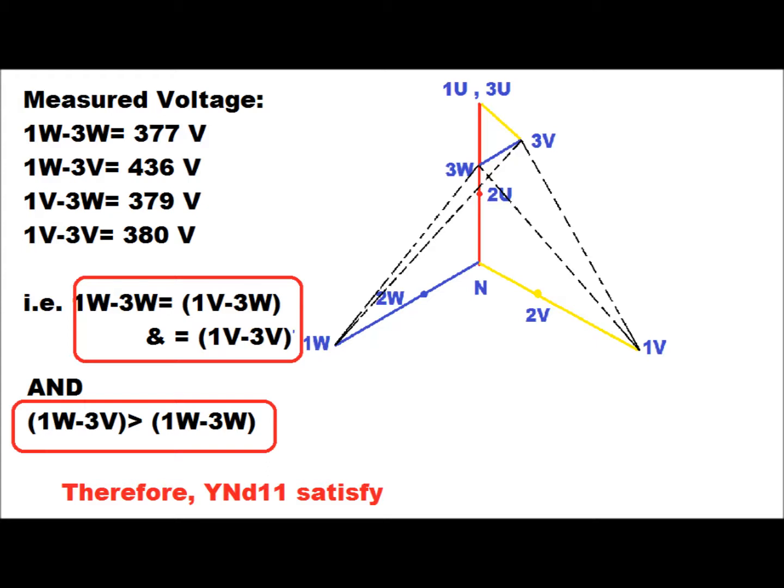We then measure the voltage between 1W-to-3W, 1W-to-3V, 1V-to-3W, and 1V-to-3V as shown in the vector diagram by black dotted lines. The measured voltage between 1W-to-3W comes to 377 V, between 1W-to-3V comes to 436 V, between 1V-to-3W comes to 379 V, and between 1V-to-3V comes to 384 V. We can conclude that 1W-to-3W ≈ 1V-to-3W ≈ 1V-to-3V, and the voltage between 1W-to-3V is greater than 1W-to-3W.